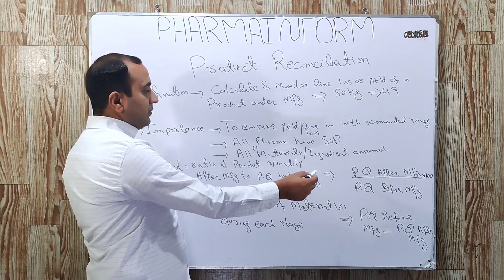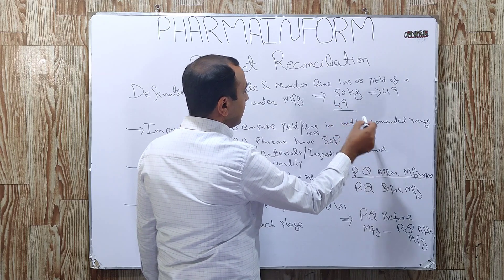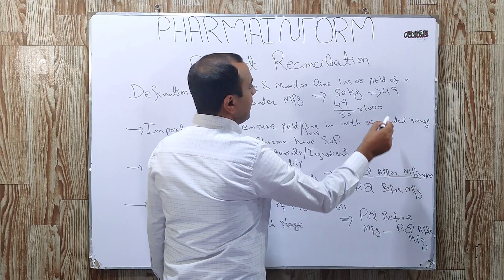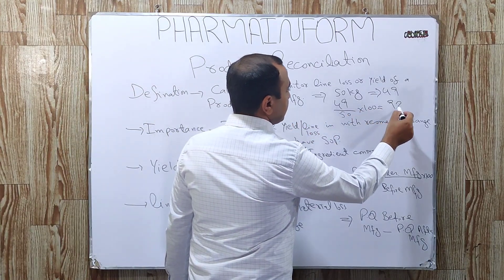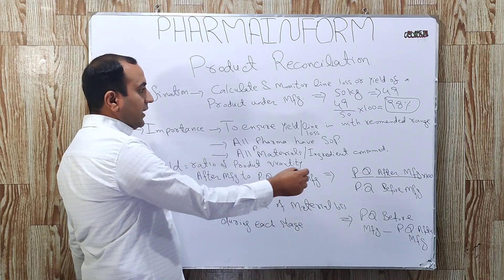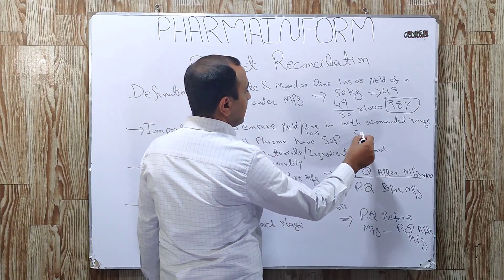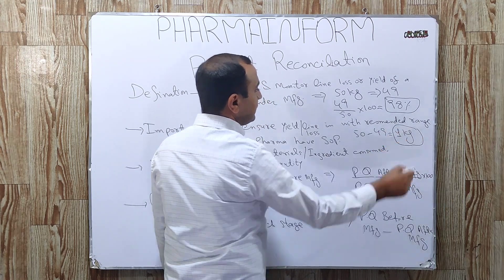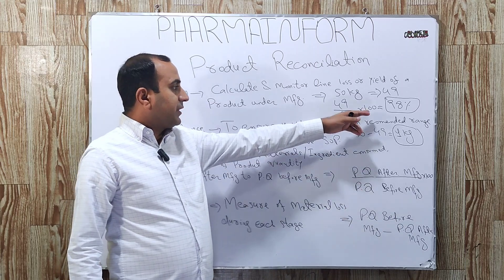How will we calculate yield? We use the formula: product quantity after manufacturing (49) divided by product quantity before manufacturing (50), multiplied by 100. The answer is 98%, meaning our yield is 98%. For line loss, we use the formula: 50 minus 49 equals 1 kg, meaning our line loss is 1 kg after the granulation stage. We now compare these values to our SOP to check if they are within the recommended ranges.